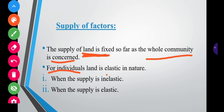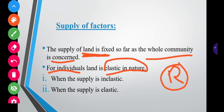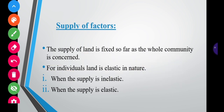For an individual, land is elastic — it can increase or decrease according to individual demand. For example, when the demand for rice increases, we can convert wheat production land into rice production land. Therefore, for individual uses or particular purposes, land is elastic in nature. So we have two types of supply of land: inelastic supply and elastic supply.